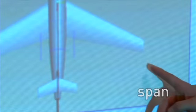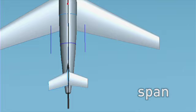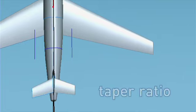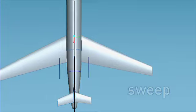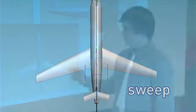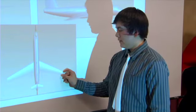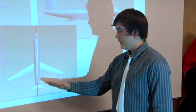Span is the distance tip to tip across each wing. Taper ratio is how small the wing gets toward the tip. Sweep is the angle the wing is at — if we had a larger sweep, it would angle down more.